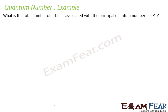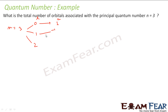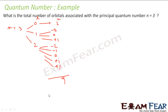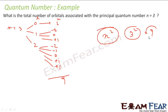Let us take an example: what is the total number of orbitals associated with quantum number N equals 3? If N equals 3, L can have values 0, 1, and 2. For L equals 0 I have 1 orbital. For L equals 1 I have orbitals minus 1, 0, plus 1 — that is 3 orbitals. For L equals 2 I have orbitals minus 2, minus 1, 0, plus 1, plus 2 — that is 5 orbitals. Total: 1 plus 3 plus 5 equals 9 orbitals. We can also use the formula directly: N² gives the number of orbitals, so 3² equals 9 orbitals.